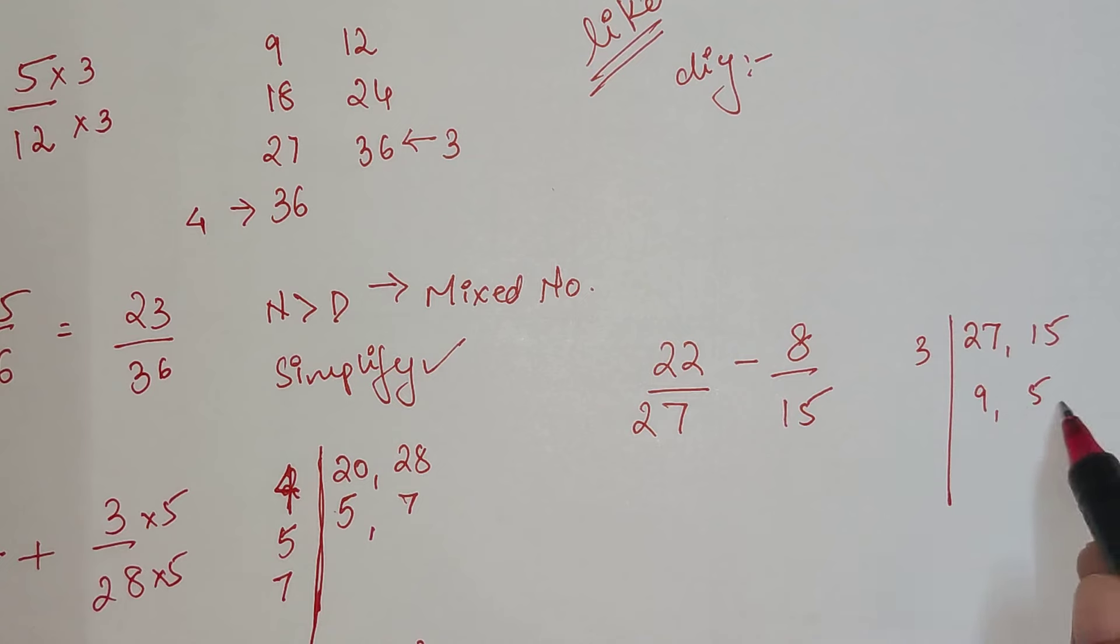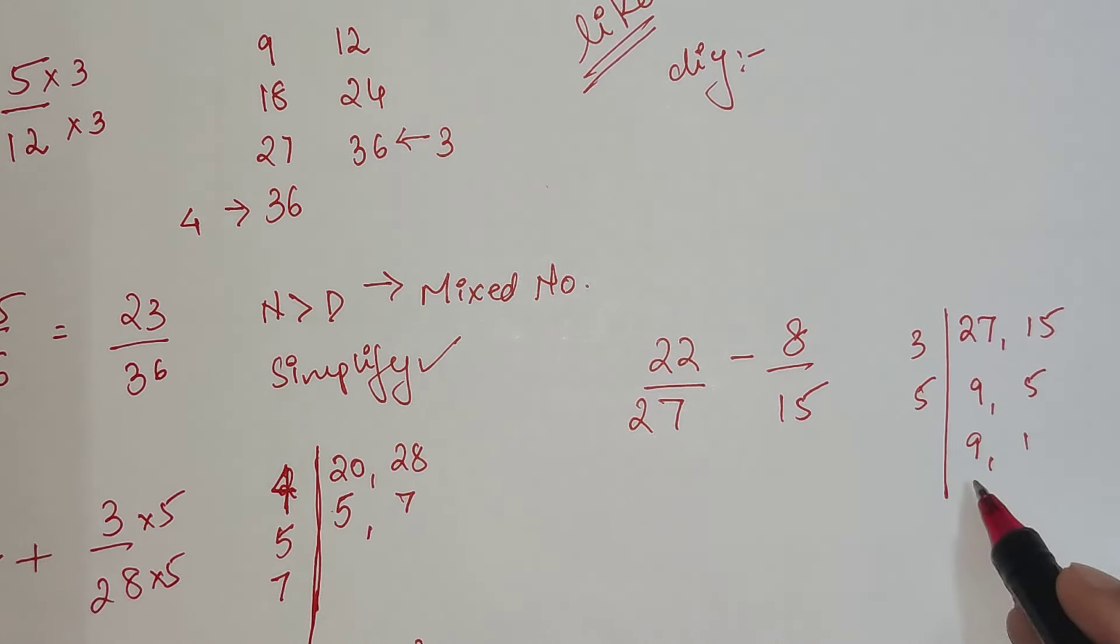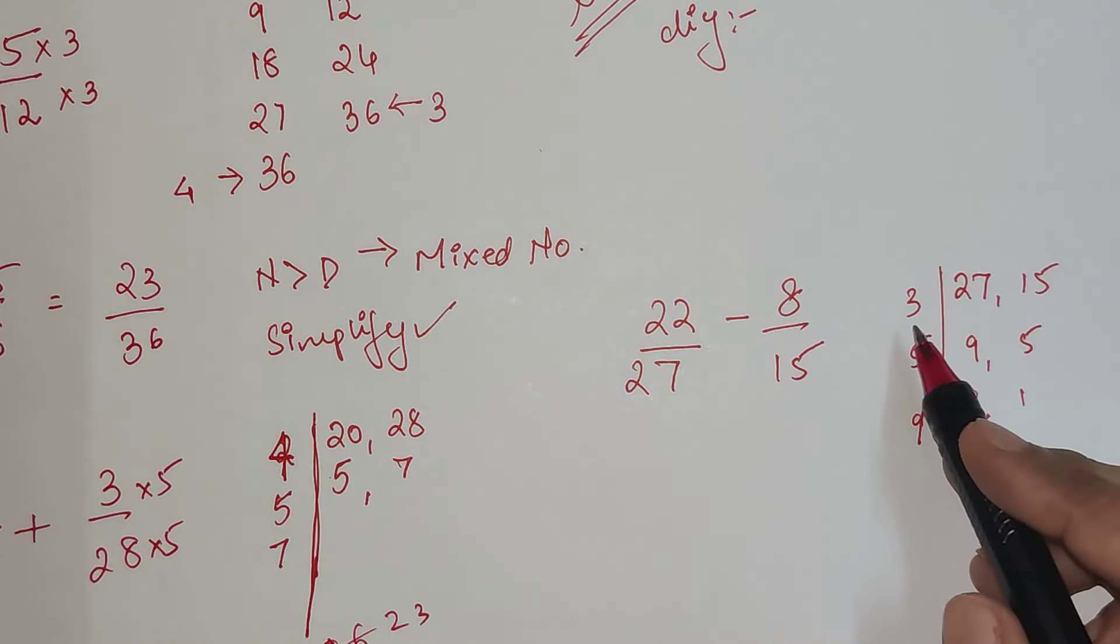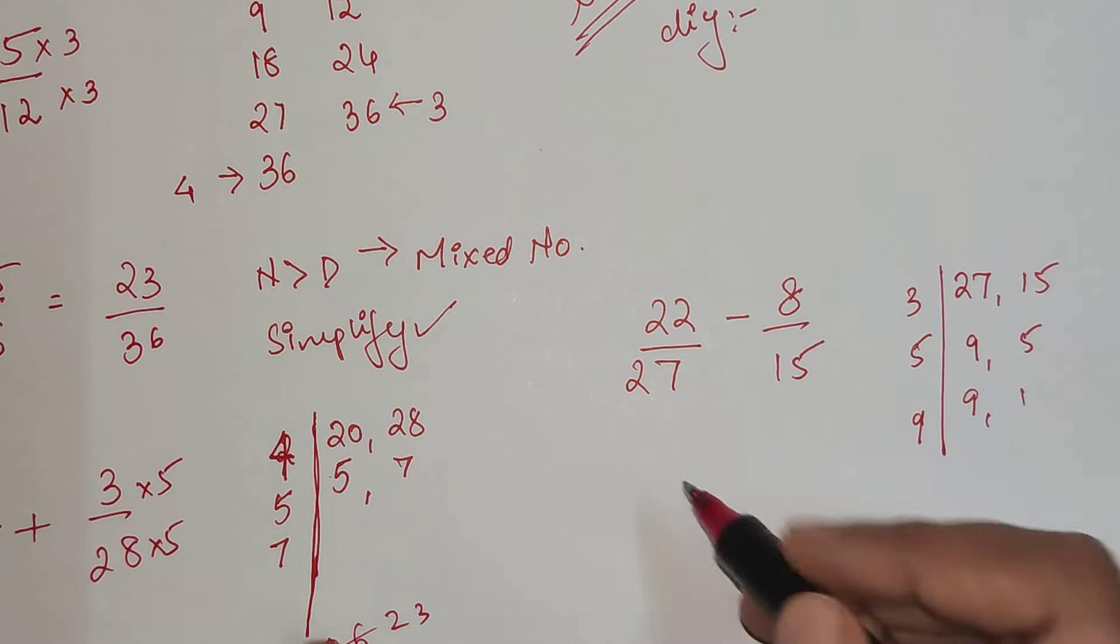Now I know that out of this two, only 5 is a prime number. So I'm just left with 9, and we can directly write down 9. So we get 3 into 5 into 9. That gets me 135.